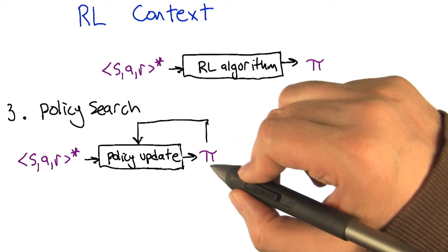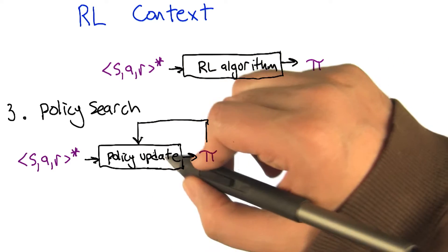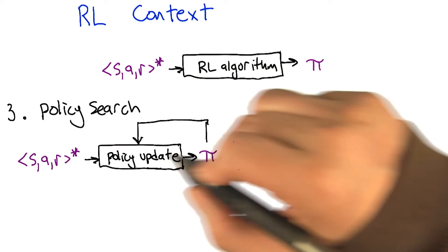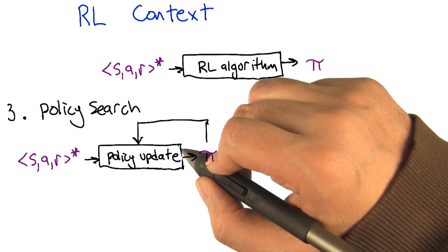And then a third class of reinforcement learning algorithms comes from the idea that you could take the policy itself and feed that back to a policy update, that directly modifies the policy based on the state action rewards that you receive.